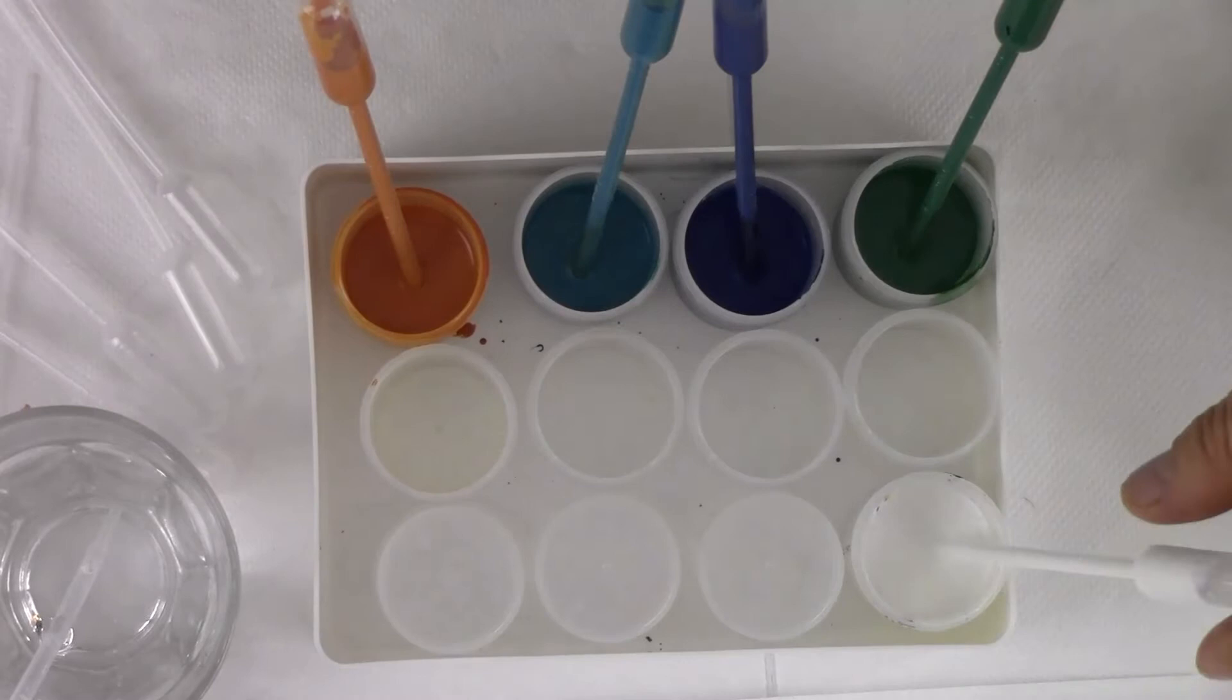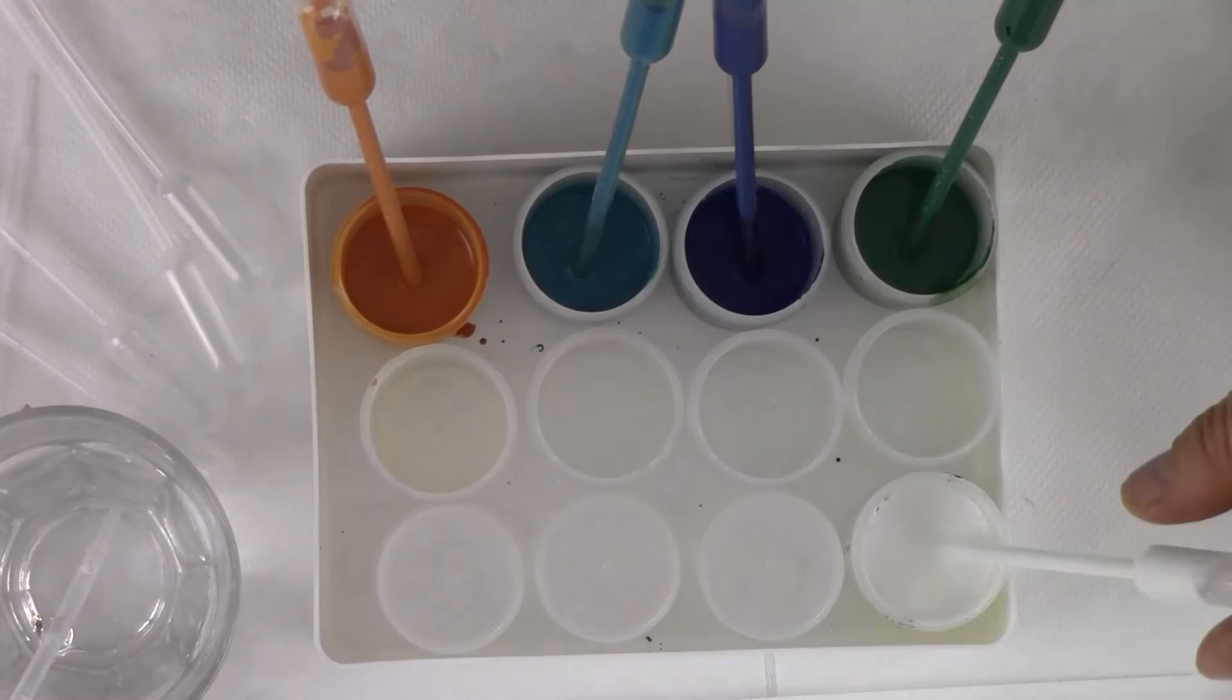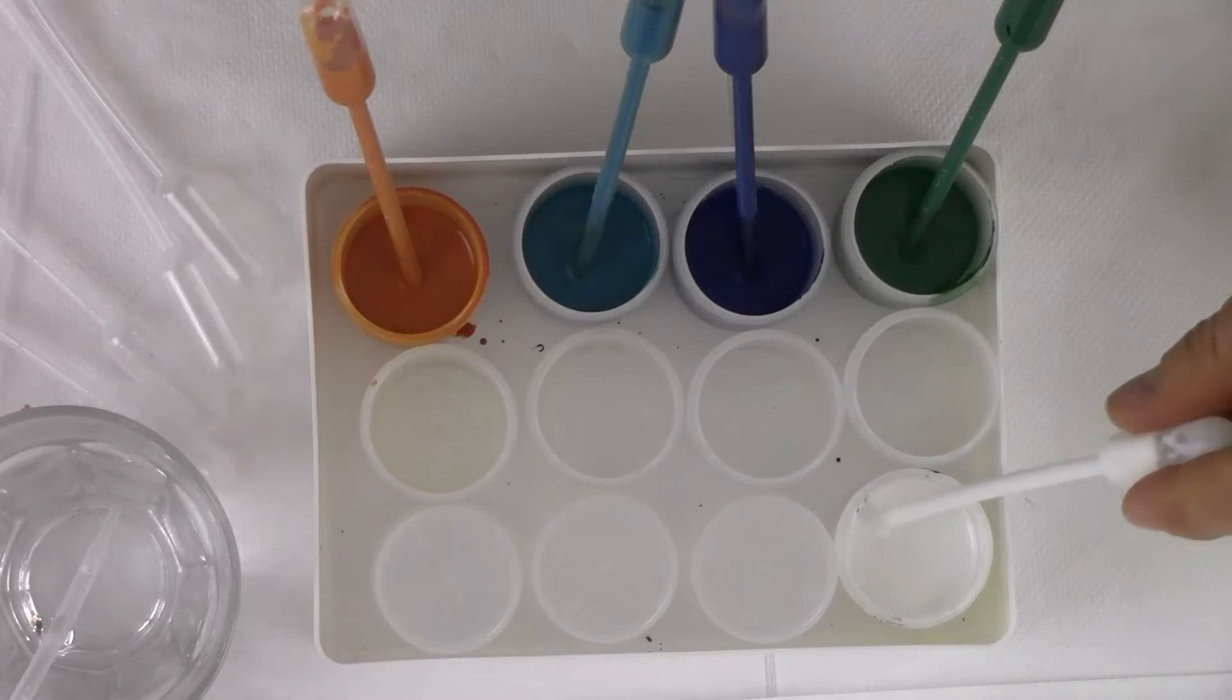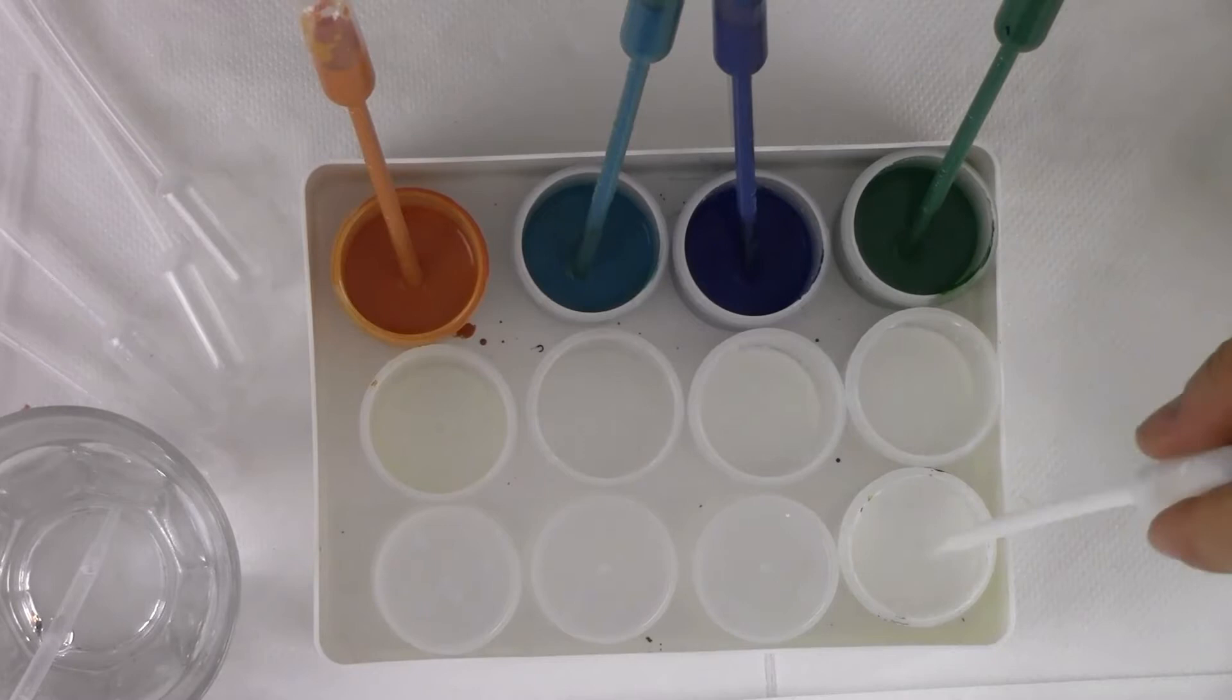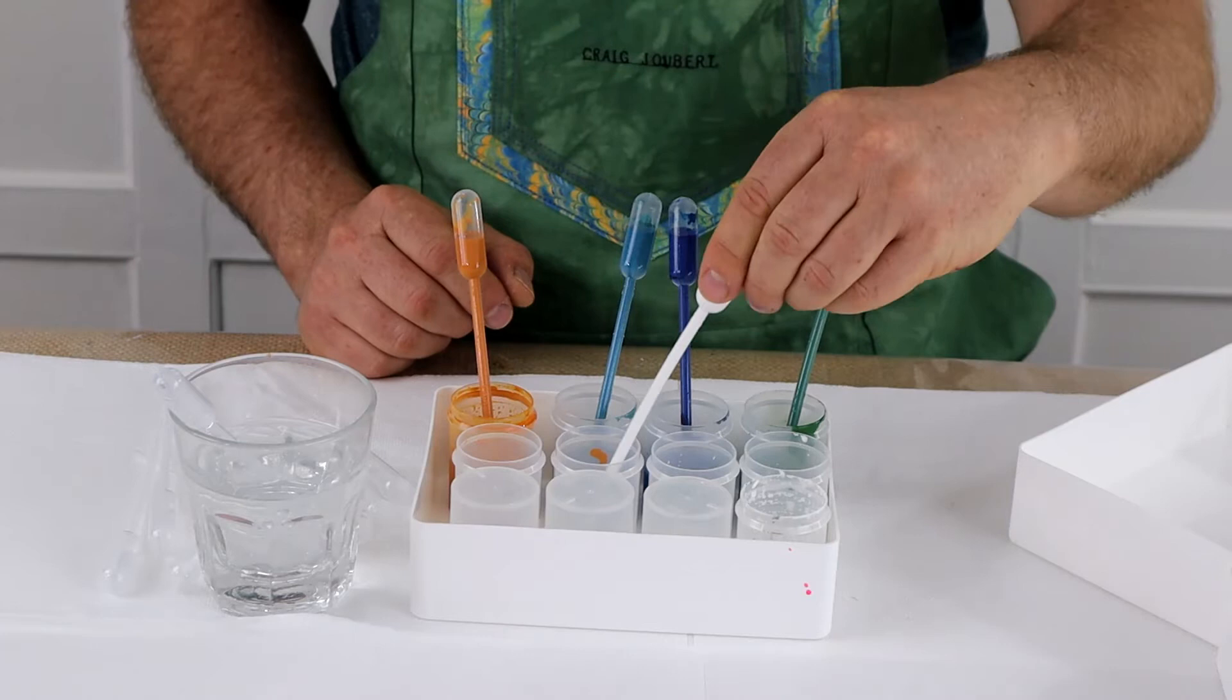Now what we're going to be doing is we're going to be adding the white that has been already pre-mixed and that is going to be put into the pot in front of the country green. So as you can see I'm just putting two.